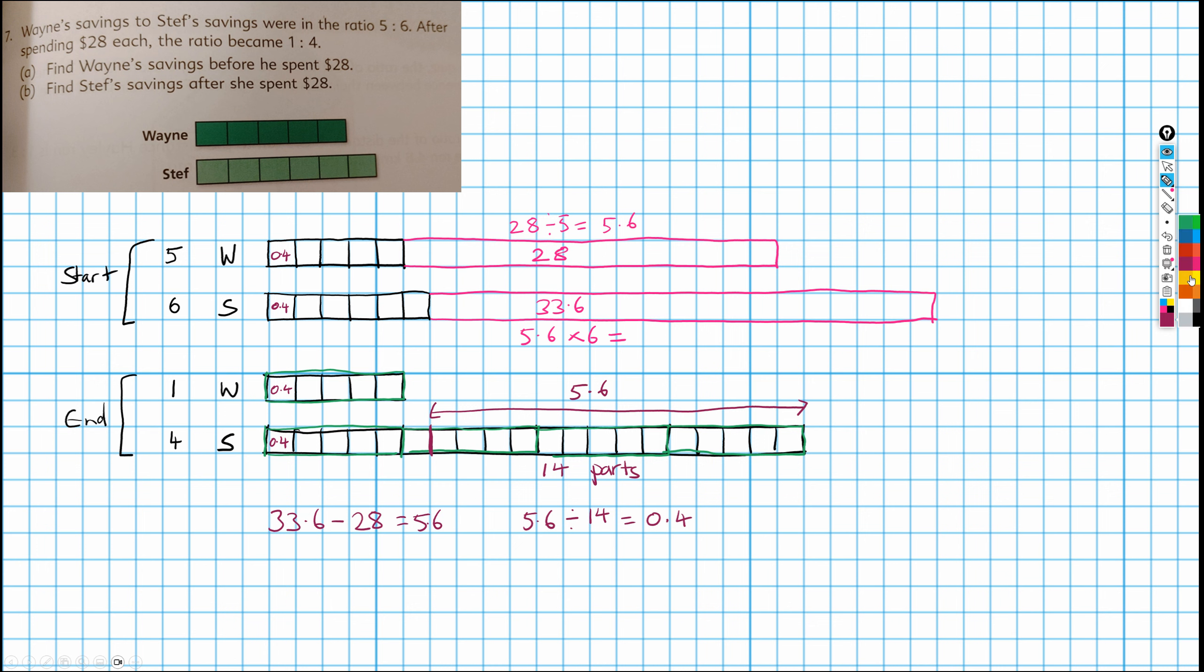So then, what are we asked to do? We are asked, find Wayne's savings before he spent $28. So if each of these parts has a value of 0.4, then we want 0.4 times 1, 2, 3, 4, 5, which is 2. So this has a value of 2. Wayne's savings before he spent $28, if we add 2 to 28, then this whole thing has a value of 30. So $30. That's what Wayne had before he went on his spending spree.